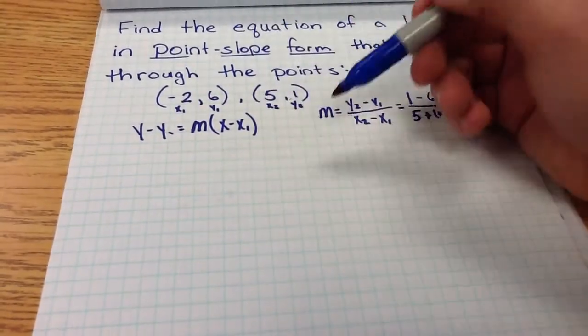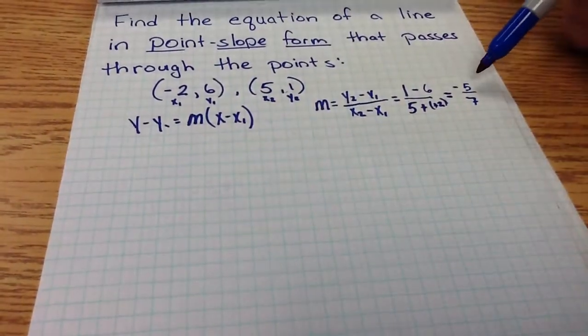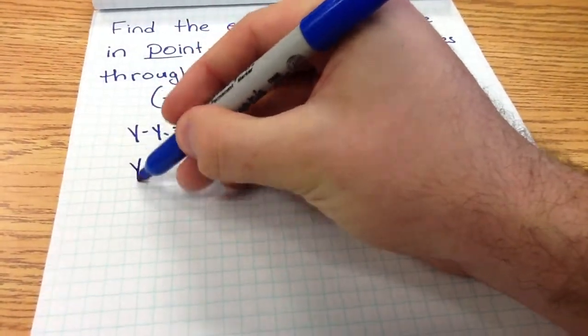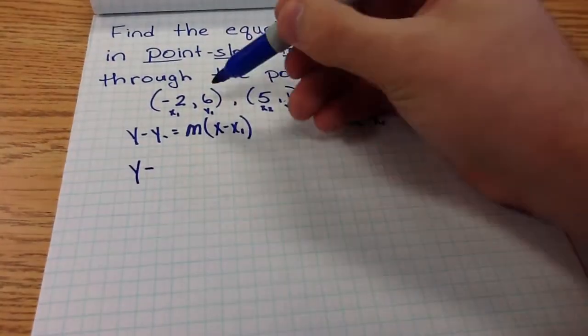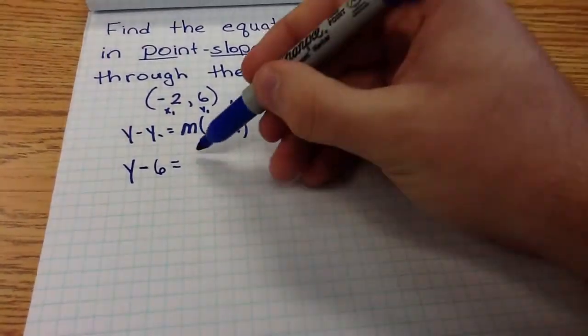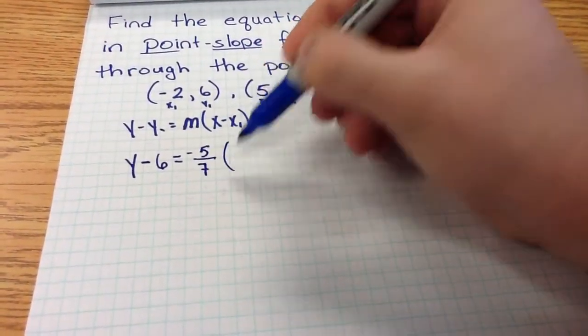So we go ahead and plug in our values. Remember, negative 2 is our x value, 6 is our y value, our slope is negative 5 sevenths. y remains y, minus your y value, which is 6, equals the slope, which is negative 5 sevenths, times x.